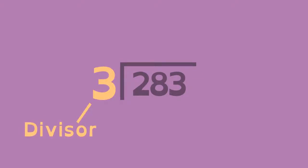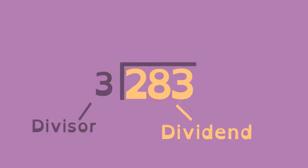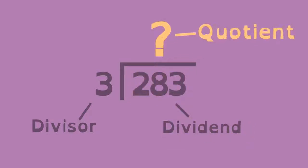The divisor, the number you divide by, goes here. The dividend, the number you're dividing, goes here. The answer, or quotient, will go here.